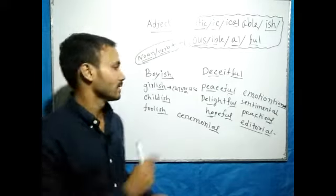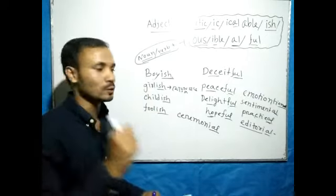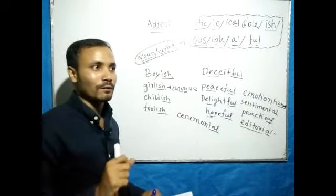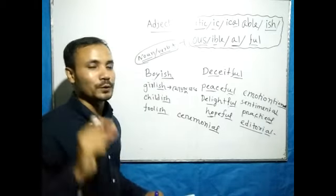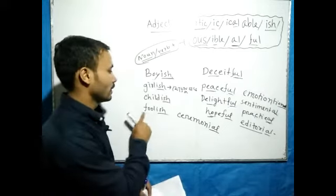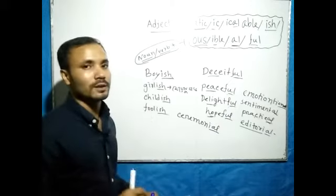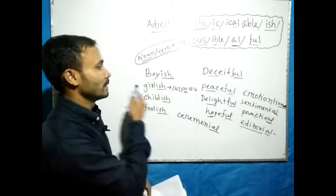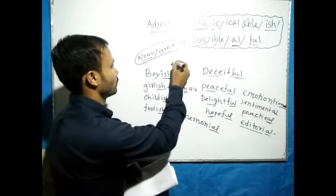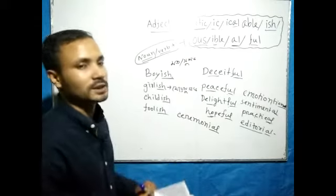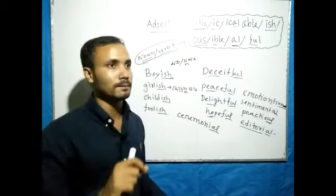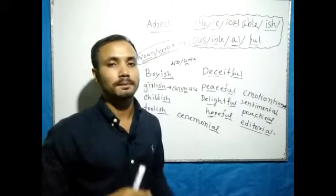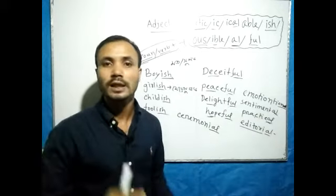We know 'fool' means 'stupid/boka.' When '-ish' is added to 'fool,' we get 'foolish,' meaning behaving like a fool, or stupid behavior. For example, if someone acts like a fool, we say they are foolish. Today we have seen how suffixes in word formation — how adding suffixes to words creates new words, particularly adjectives.